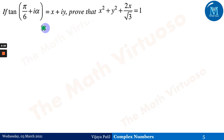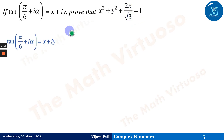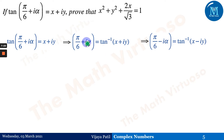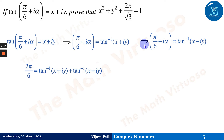The third question: if tan(π/6 + iα) = x + iy, prove that x² + y² + 2x/√3 = 1. We write π/6 + iα = tan⁻¹(x + iy) and, taking the conjugate, π/6 - iα = tan⁻¹(x - iy).